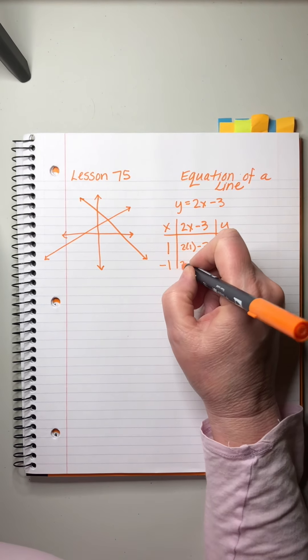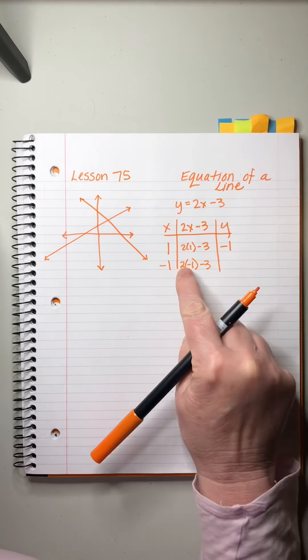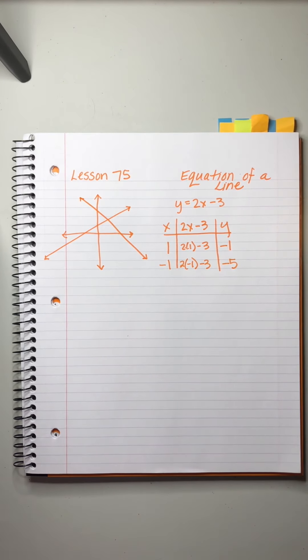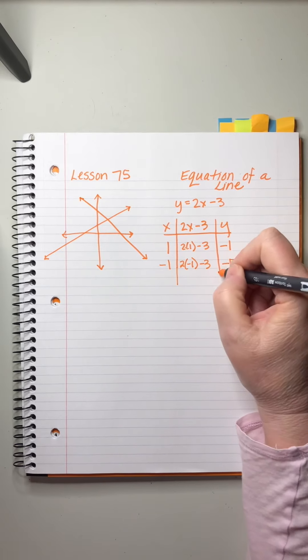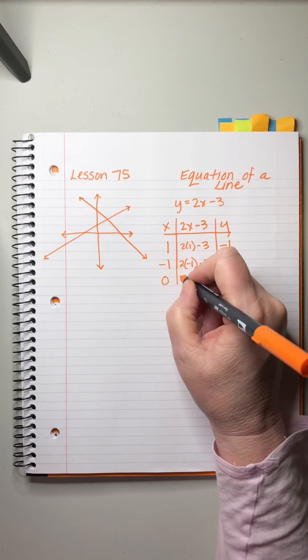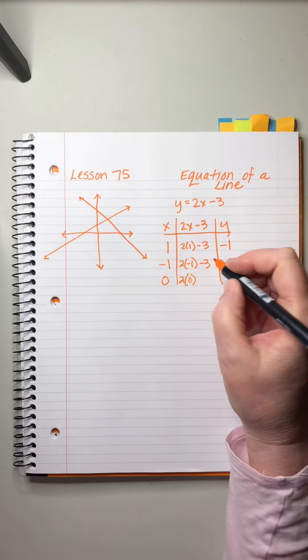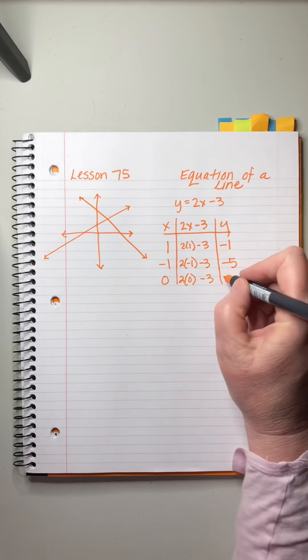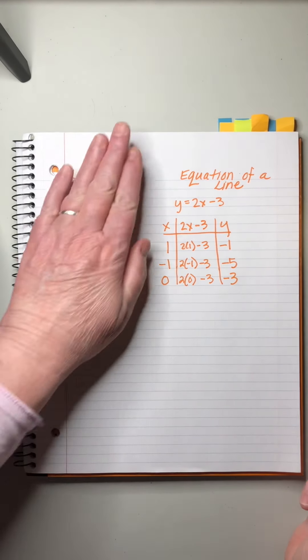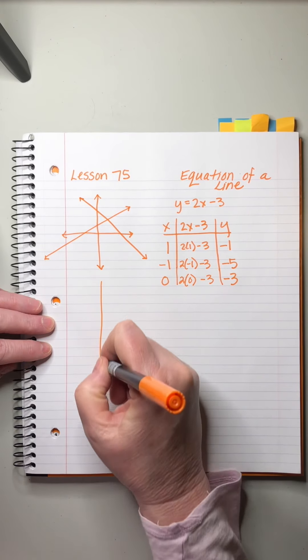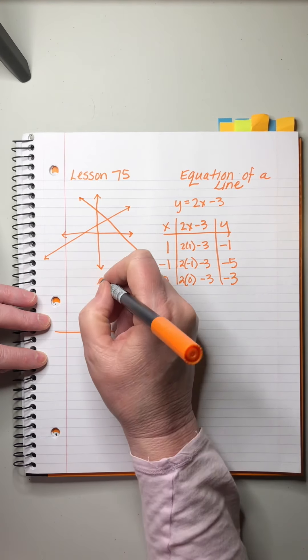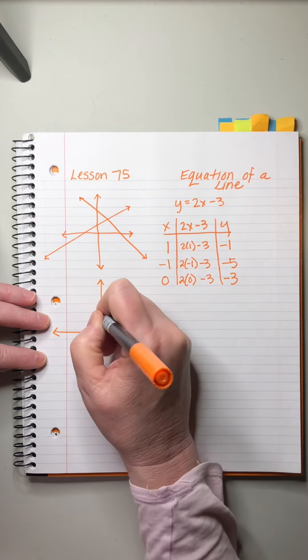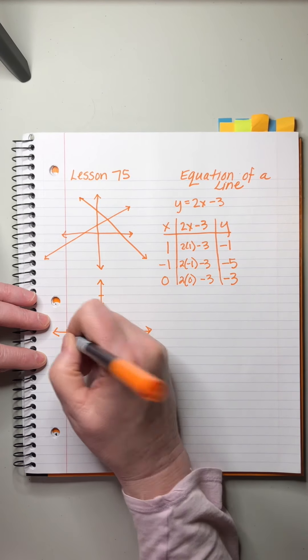Let's do another one. Let's do negative 1, 2 times negative 1 minus 3. That would be negative 2 minus 3 more, right? And then our rule is to always do 3 because then if you screw up one of them, then your line won't be straight and you can fix it. 2 times 0 is 0, 0 minus 3 is negative 3.